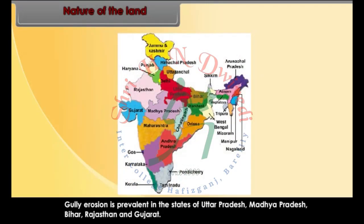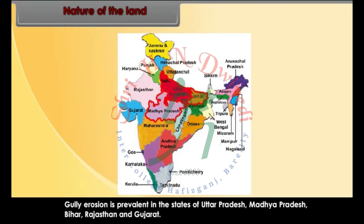Gully erosion is prevalent in the states of Uttar Pradesh, Madhya Pradesh, Bihar, Rajasthan and Gujarat.